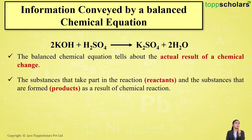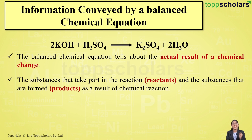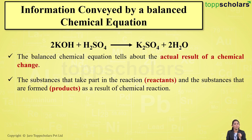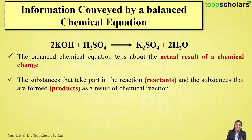In a chemical reaction, the substances which take part are called reactants, and the substances which are formed as a result of the chemical reaction are called products. So a balanced chemical equation gives you information about the reactants as well as the products which are formed.